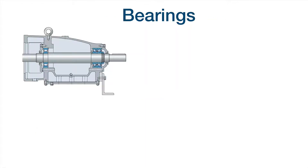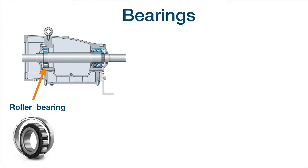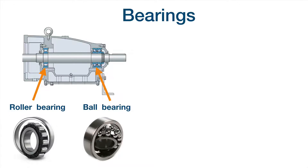Bearings: the function of bearings is to support the rotating shaft and all loads generated due to the rotation of the shaft — the forces involved in a rotating machine. Here we have a roller bearing, composed of cylinders, and this is a ball bearing. The lubrication of bearings is a very important issue. For example, roller bearings and ball bearings can be lubricated by grease. Bearings are normally sealed to avoid leakage or the entrance of dust.